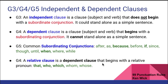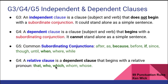A relative clause is just a dependent clause that begins with a relative pronoun: that, who, which, whom, and whose. You could actually add these to the list of subordinating conjunctions, because these words also make a dependent clause. Just in case you see the term 'relative clause,' it's referring to a dependent clause that starts with these relative pronouns. The words that, who, and which are very common.